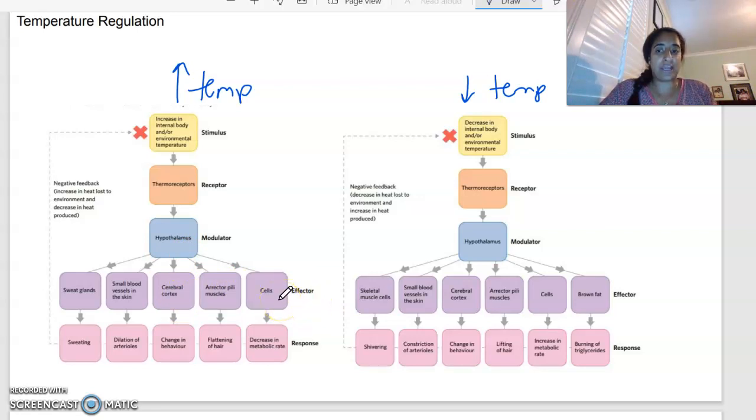The response when we are too hot, we know is sweating, dilation of the arterioles, also known as vasodilation, changes in behavior. So you might decide, oh, I'm going to not wear a jumper inside. I'm going to turn the aircon on, things like that. Flattening of the hair as well to sort of decrease that insulating layer and decrease in metabolic rate. Once our temperature has declined from being too hot, we will fit that negative feedback.